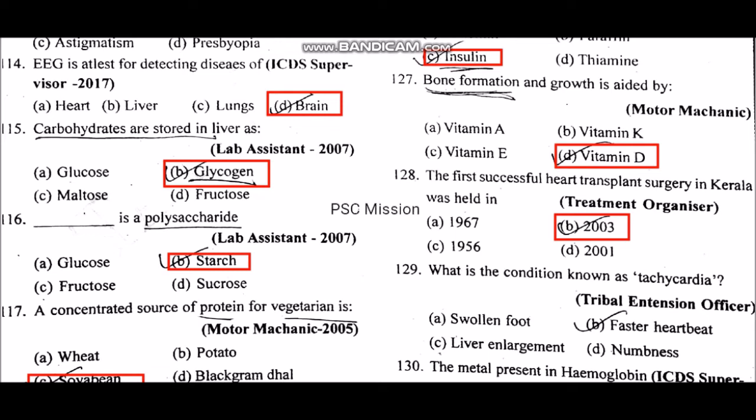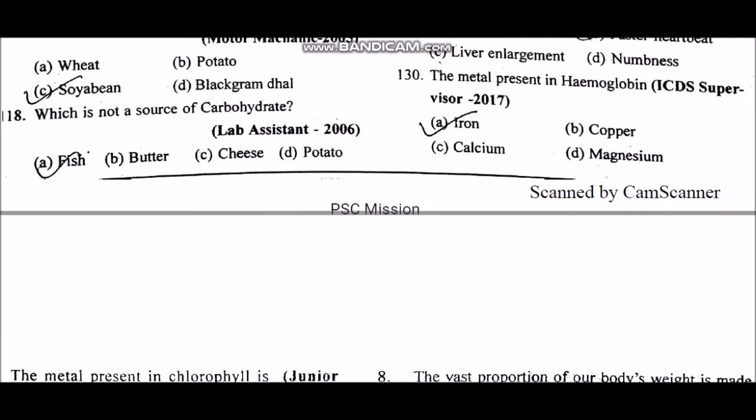What is the condition known as tachycardia? Tachycardia is the condition of abnormally fast heartbeat. Which is not a source of carbohydrate? Fish.